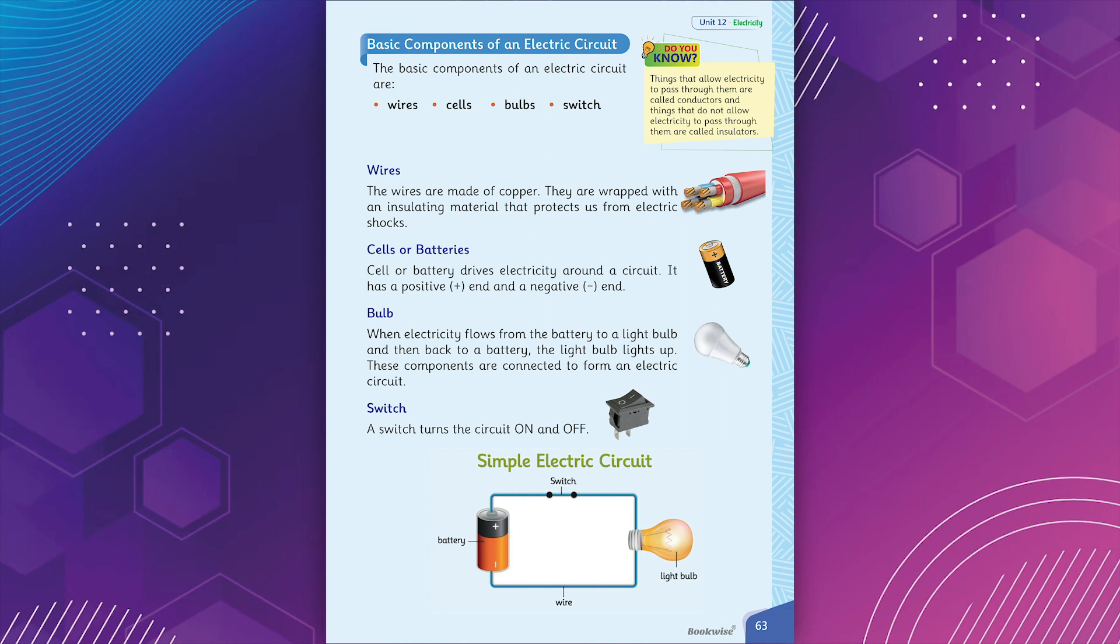Wires. The wires are made of copper. They are wrapped with an insulating material that protects us from electric shocks.